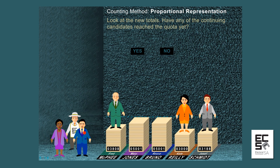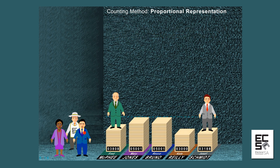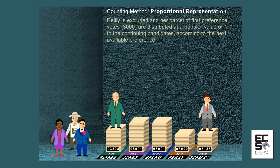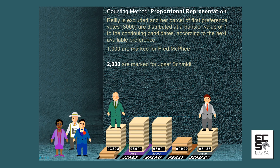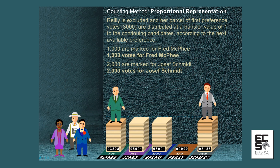Look at the new totals. Have any of the continuing candidates reached quota yet? None of the continuing candidates has a quota, so the candidate with the least votes is excluded. Riley is excluded and her parcel of first preference votes — 3,000 — are distributed at a transfer value of 1 to the continuing candidates according to the next available preference. 1,000 are marked for Fred McPhee, giving 1,000 votes for Fred McPhee; 2,000 are marked for Joseph Schmidt, giving 2,000 votes for Joseph Schmidt.